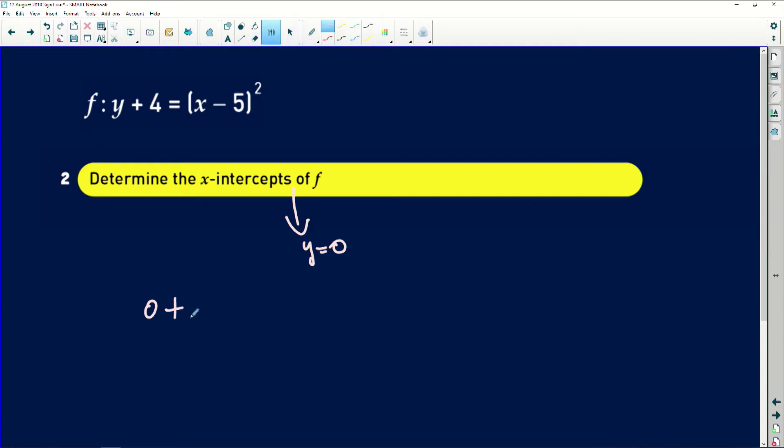So this will be 0 plus 4 is equal to x minus 5 all squared. Now, I know the very first thing that you guys can do here is to square root both sides. Please don't do that. First, expand this thing here and then work it out after that.